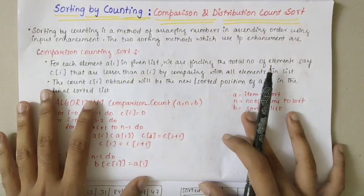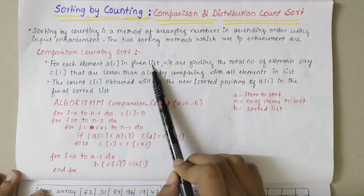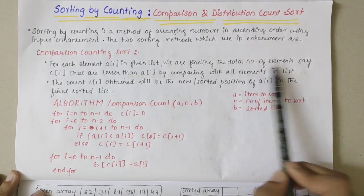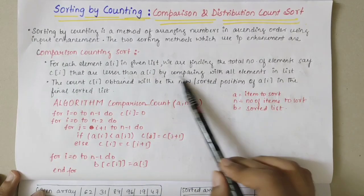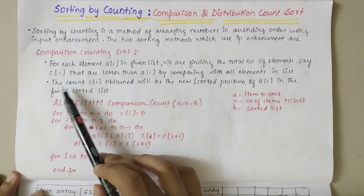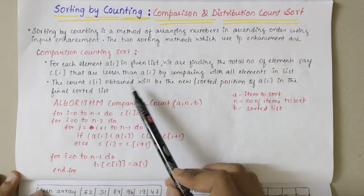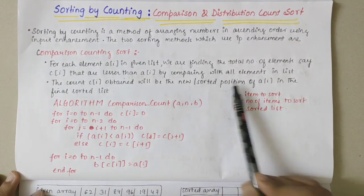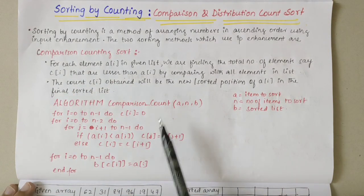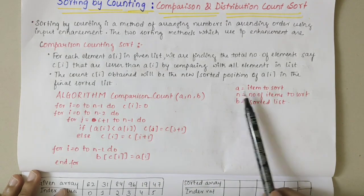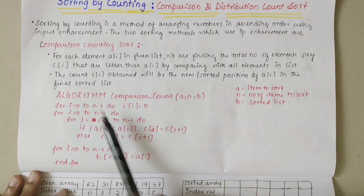First we'll look into comparison counting sort. For each element A[i] in the given list, we find the total number of elements C[i] that are lesser than A[i] by comparing with all elements in the list. Once you find the value, the count C[i] obtained will be the new position of A[i] in the final sorted list. In the algorithm, A means items to be sorted, n is number of items to sort, and B is the sorted list.